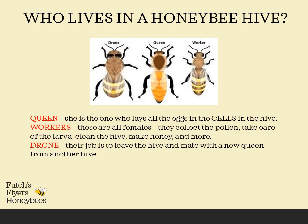The queen — she's the one that lays all the eggs in those cells that we saw. The workers, all of them are females or girls — they collect pollen, take care of the larvae, clean the hive, make honey, and perform all kinds of tasks.